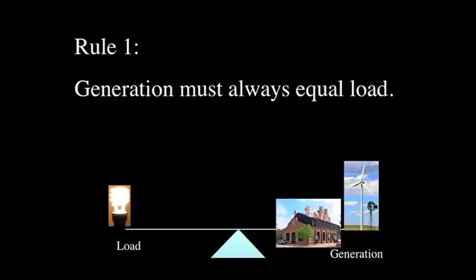There's only one rule you really care about: generation must always equal load. Load is all the ways we use electricity, and generation is all the ways we make electricity — with coal-fired power plants, natural gas, solar, and wind. They must always precisely equal each other. If you get a little too far off in either direction, the lights go out.